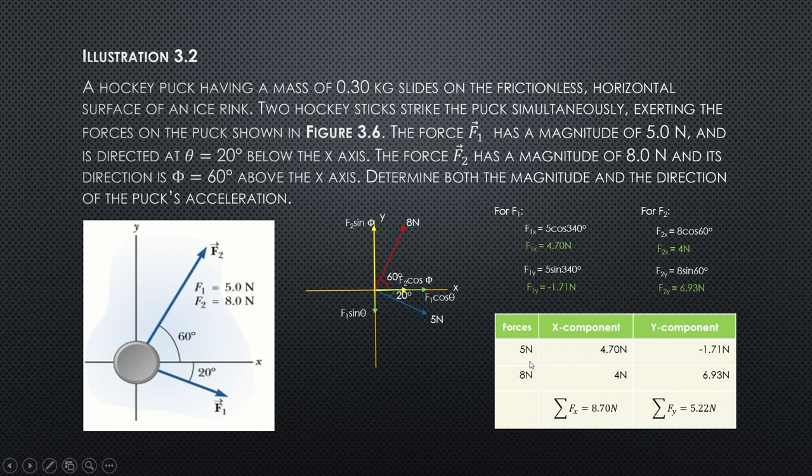Summarizing the values: for F1, 5 N, you get its x component as 4.70 N and its y is negative 1.71 N. For F2, the x component is 4 N and its y component is 6.93 N. Summation of forces along the x: 4.70 plus 4 gives you 8.70 N. For the y component: negative 1.71 plus 6.93 gives you 5.22 N.